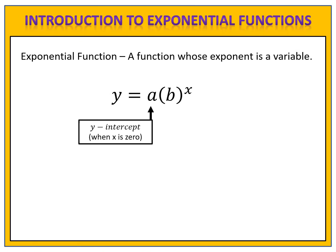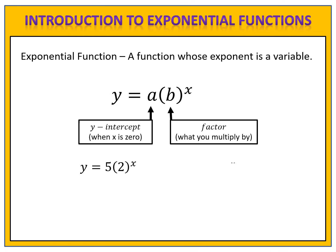Now how about b? The b value represents the factor — the factor is what you multiply by. Take a look at this example: we have the function y equals 5 times 2 to the x. We know that this is an exponential function because the exponent is a variable. We want to create an input and output table.